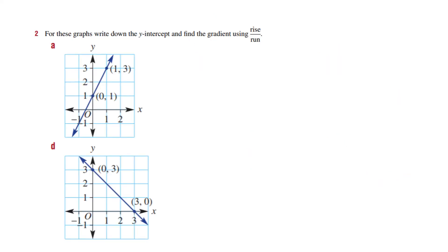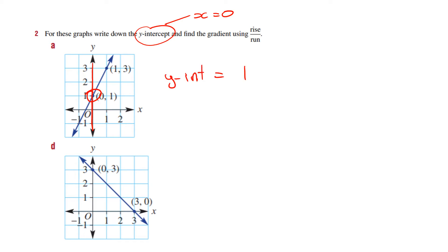For these graphs, we need to write the y-intercept and find the gradient using rise over run. Remember, the y-intercept is where x equals 0 — that's where the graph crosses the y-axis. In this case that crosses at 1, so the y-intercept is 1. On this next example it's cutting through at 3, so the y-intercept is 3.